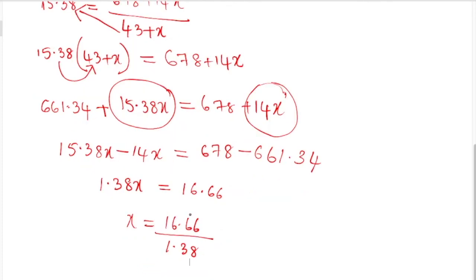I told you when you are sending the multiplication then it will become a division. So 1.38x is a multiply number, so I am sending to RHS and it will become a division.